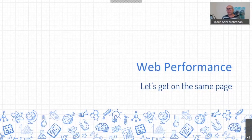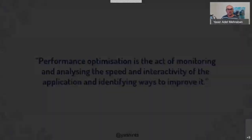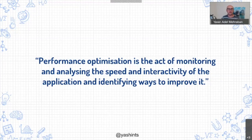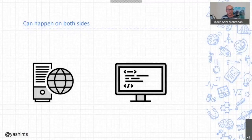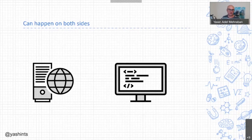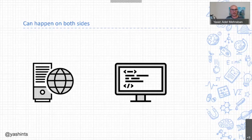Web performance is the act of monitoring and analyzing the speed and interactivity of any application and finding ways to improve it — looking at what aspects of a web app can we improve to gain performance and get a better user experience. Performance bottlenecks can happen on either the client side or server side, but for this talk we're just going to focus on the client side. There are many server-side tools, and those are very related to what server you use — Linux or Windows, Node.js, ASP.NET, Java, or whatever. So today we're talking about client side and JavaScript.